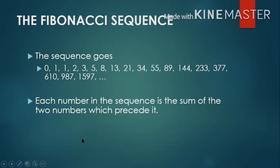Why is November 23 the Fibonacci Day? You may notice that the digits in November 23 are 1, 1, 2, 3. And in the sequence, the first four non-zero digits are 1, 1, 2, 3 — which corresponds to the Fibonacci Day. That is why November 23 is the Fibonacci Day.